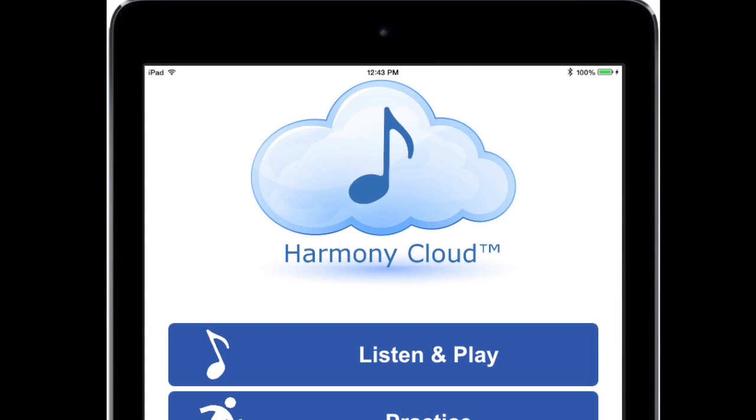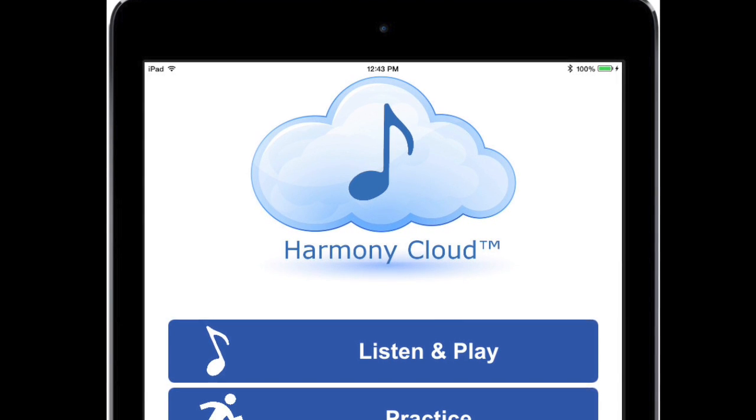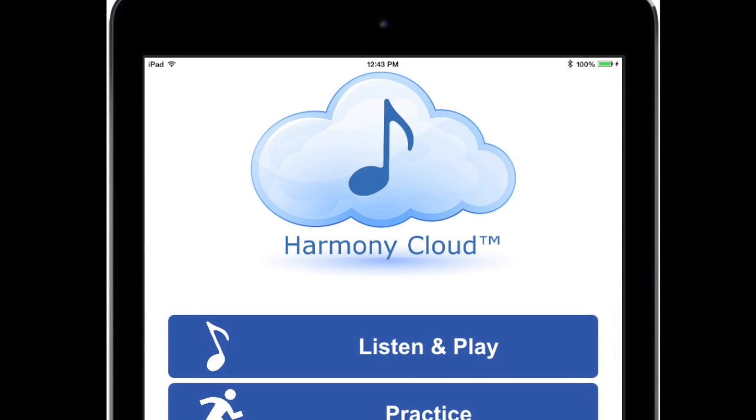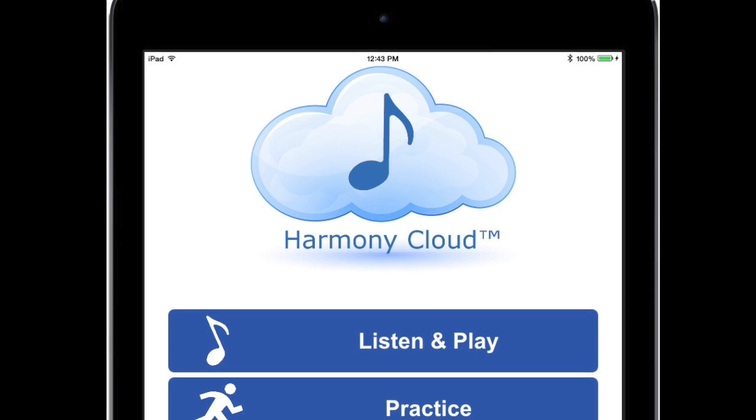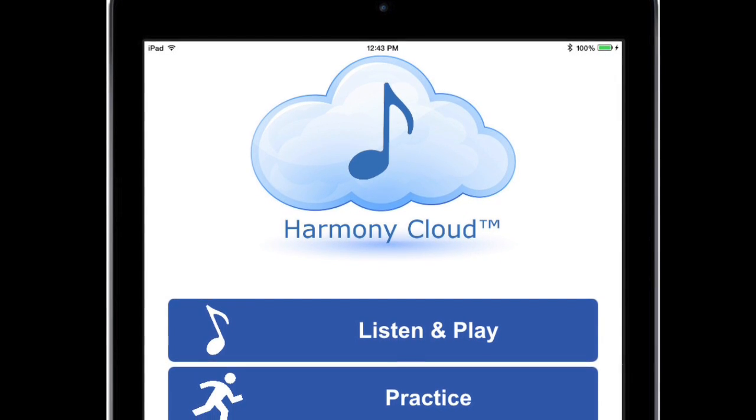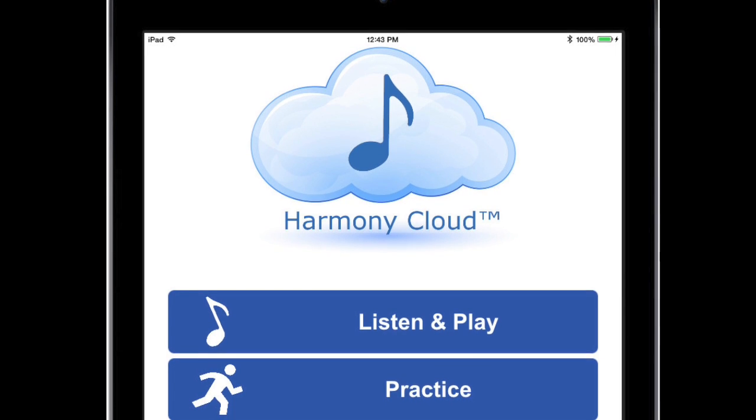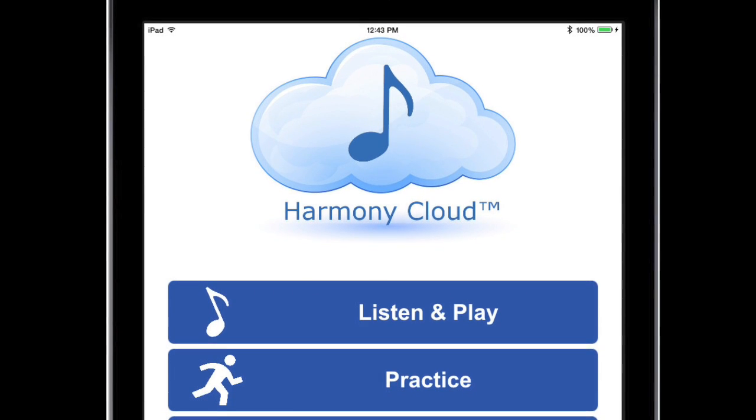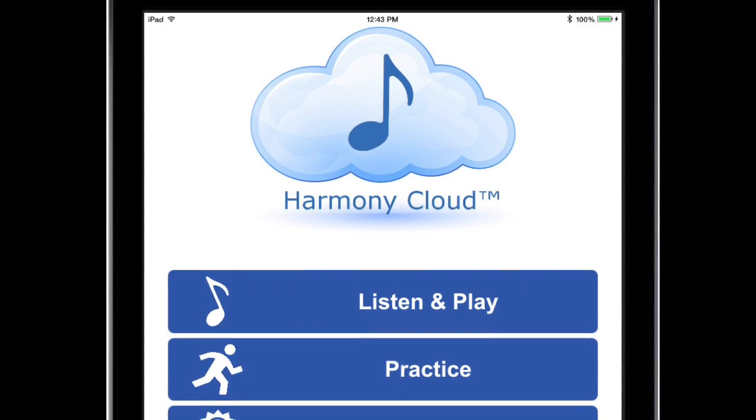Here is an image of our home screen. You'll notice at the top we have five areas listed. The first one is called Listen and Play. This is an area that we'll circle back to and open up, but it's essentially there for you to experience creating music along with the app. Under that, there's an area called Practice.